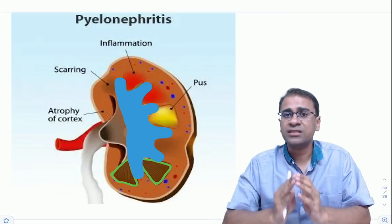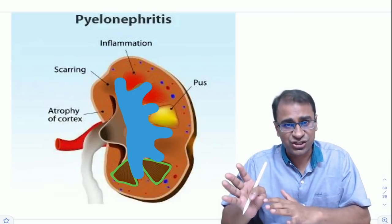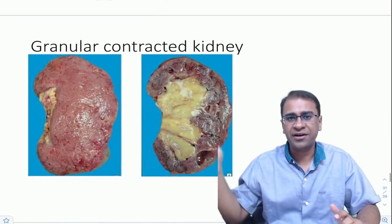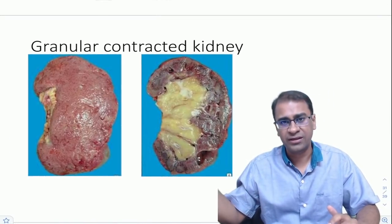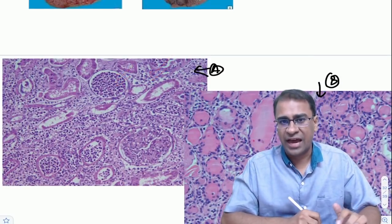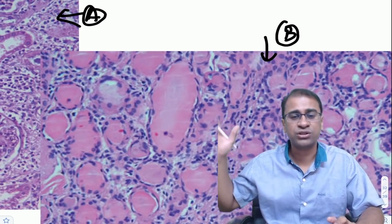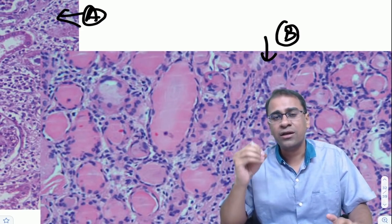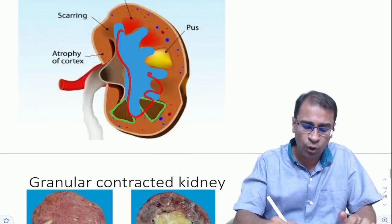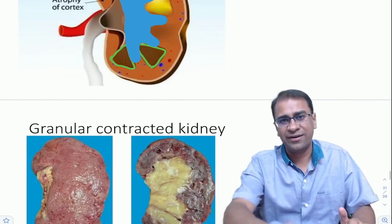Moving to pyelonephritis: here the problem is in the tubules and interstitium, not the glomerulus. You see a granular contracted kidney in chronic pyelonephritis. In acute stages there is neutrophil infiltration. In chronic pyelonephritis you see thyroidization of tubules — a very important finding. A large staghorn calculus is often associated with chronic pyelonephritis along with granular contracted kidneys.